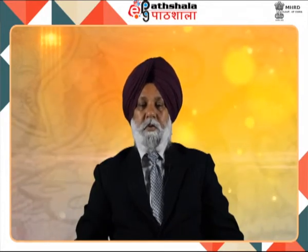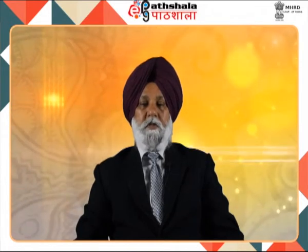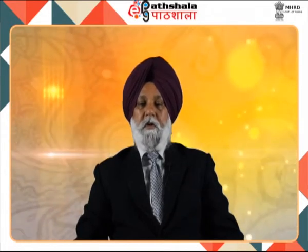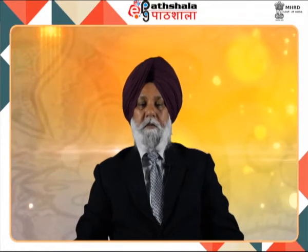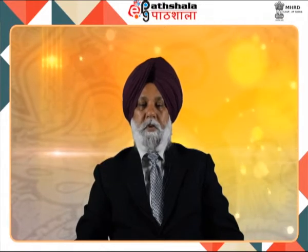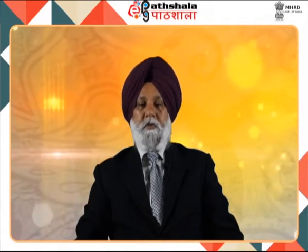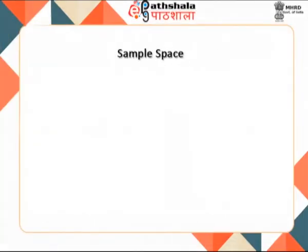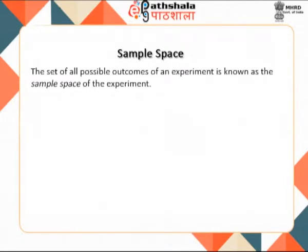In this module, we shall understand this concept by using the example of flipping a coin, rolling a die, playing card games, etc. These standard examples are used in probability because of their uncertain character. The outcome of a probabilistic experiment is not known with certainty, but the possible set of outcomes is very well known. This set of all possible outcomes of an experiment is known as the sample space of the experiment and is denoted by the letter S.